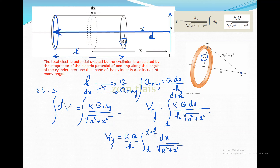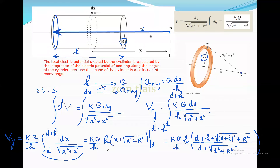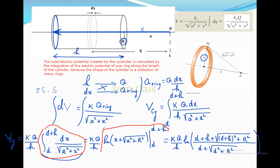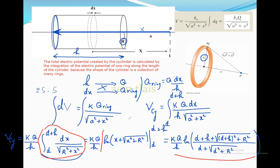As a hint, I will give you the value of this integral directly. The result is the total electric potential created by the cylindrical shell at point P.